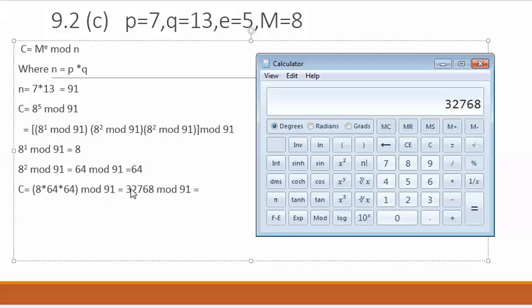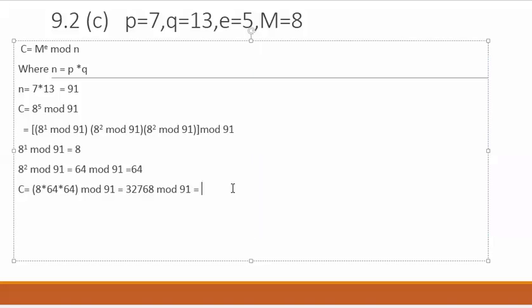To find out the mod, which means that we have to find out the remainder when 32768 is divided by 91, I'm going to divide this number by 91 and remove the part which is before the decimal, that is 360. Now I'm going to multiply with 91. This is giving 8, so 8 is the ciphertext.